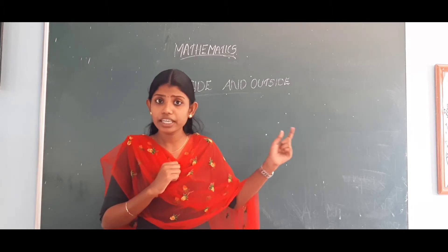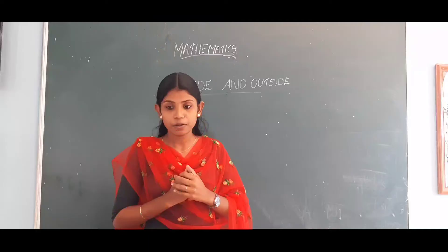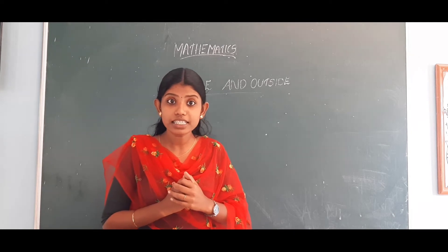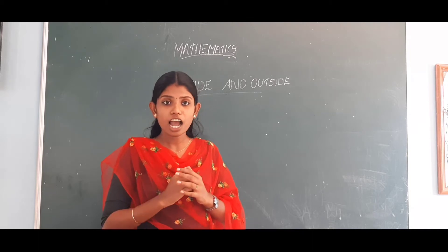In the next picture, look here. In the first picture you can see the dog is sitting inside the kennel. Where is the dog sitting? Inside the kennel. And the second picture shows the dog sitting outside the kennel. So our first concept is inside and outside.